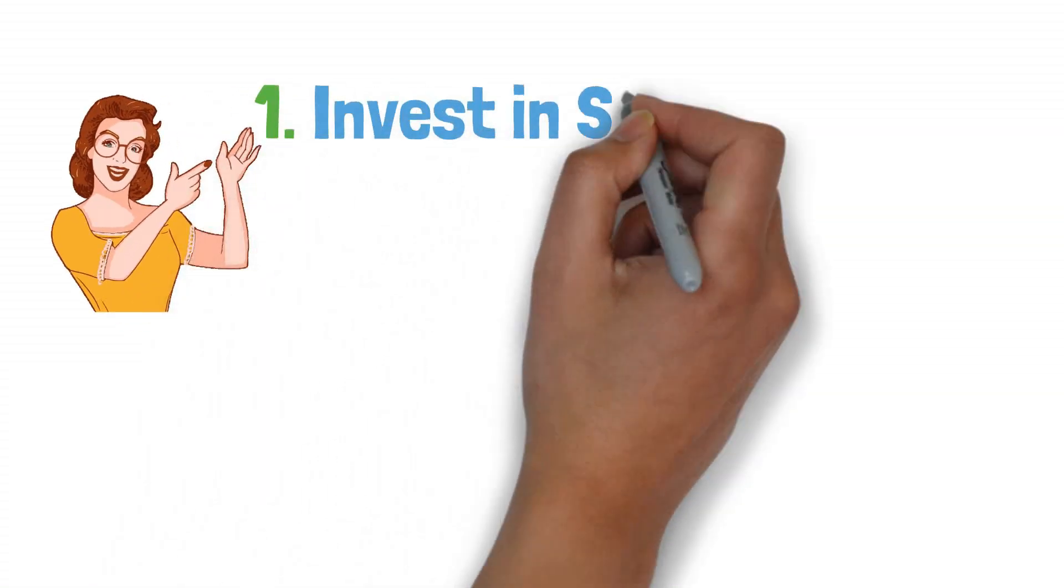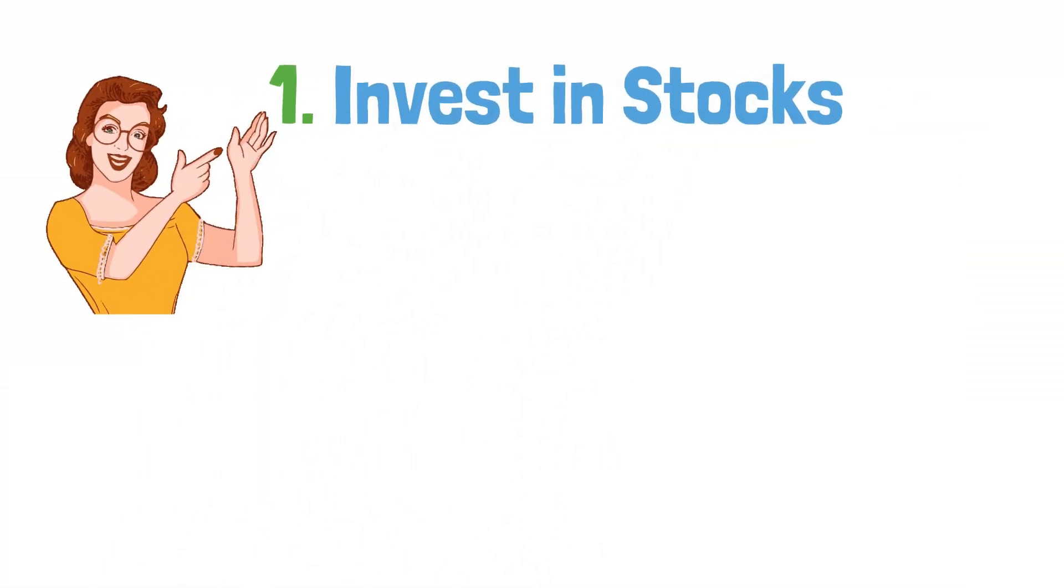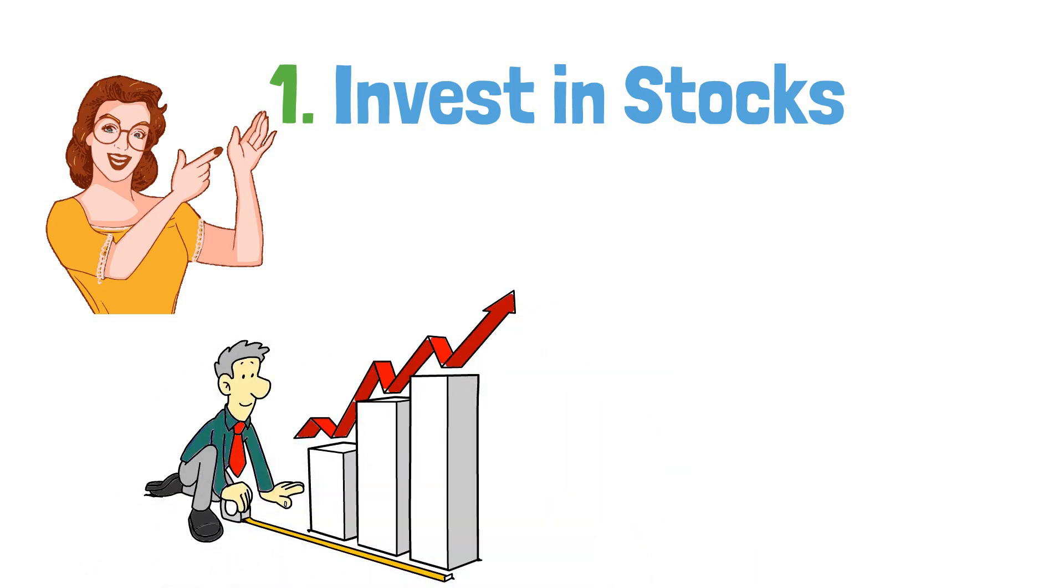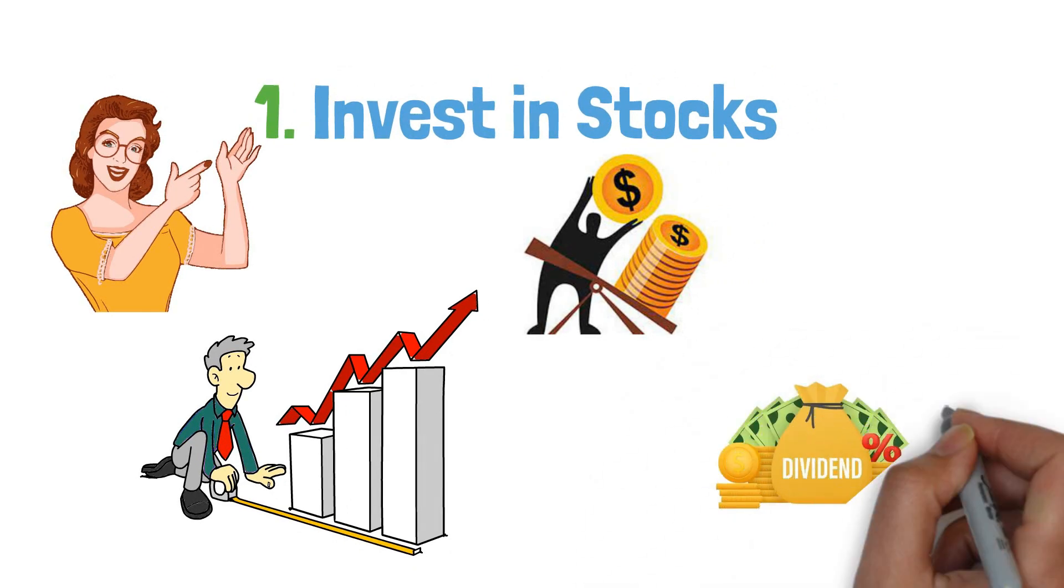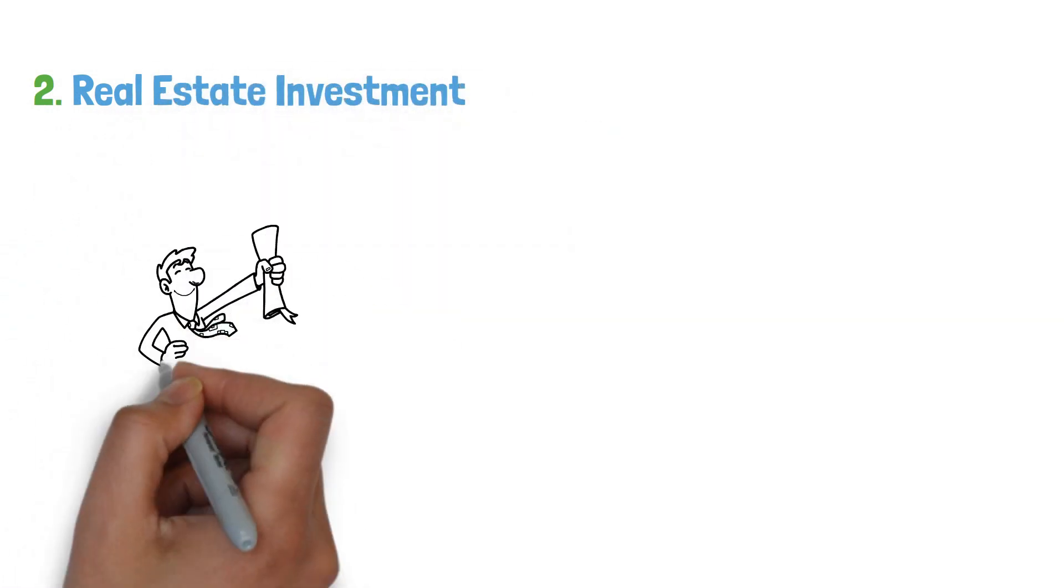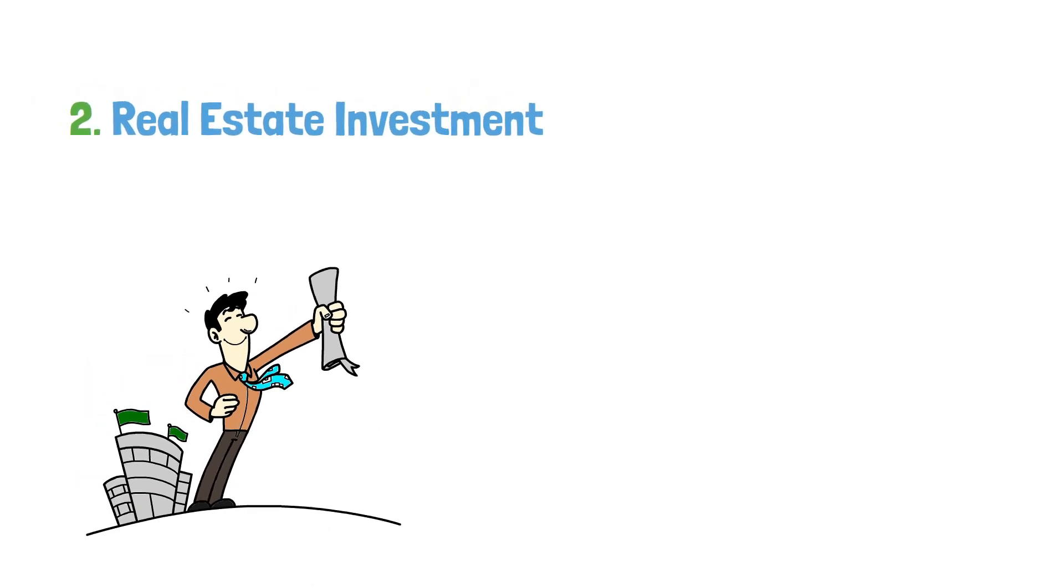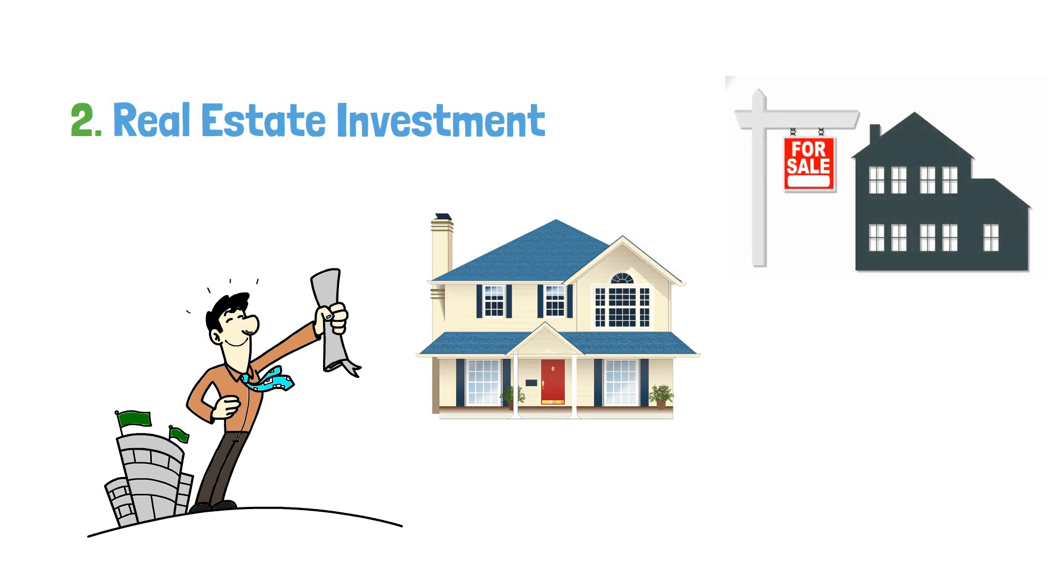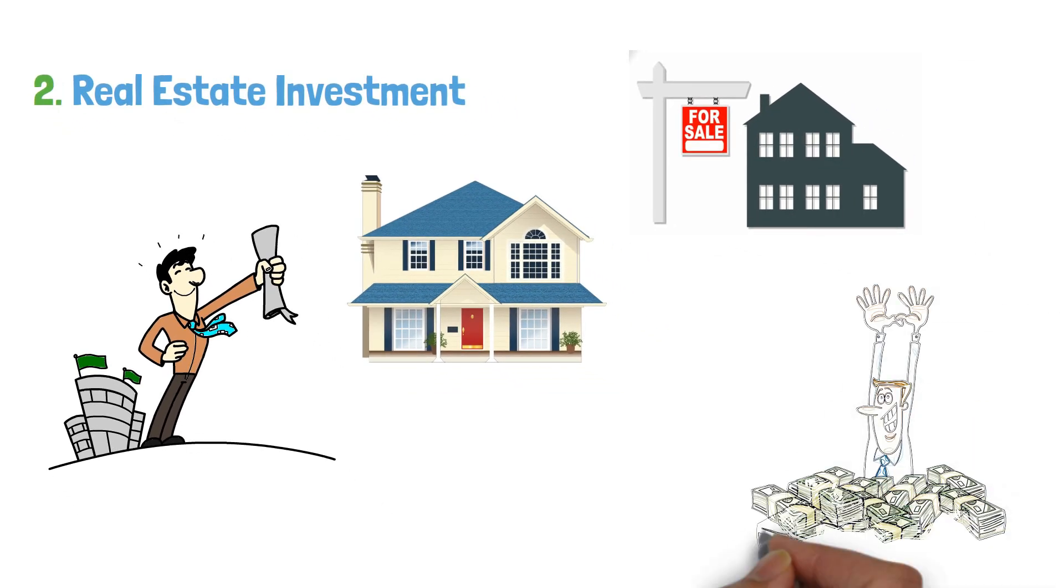Number one, invest in stocks. One of the most popular ways to create an additional income stream is by investing in the stock market. By purchasing shares of companies, you can earn dividends or sell the stocks at a higher price for a profit. Number two, real estate investment. Another lucrative option is real estate investment. Whether renting out properties for a steady income or buying and selling properties for a profit, real estate can provide a substantial additional income stream.